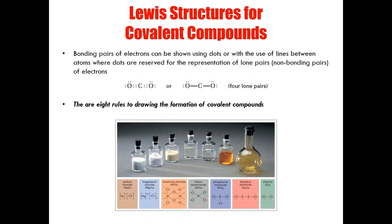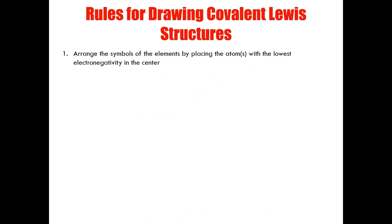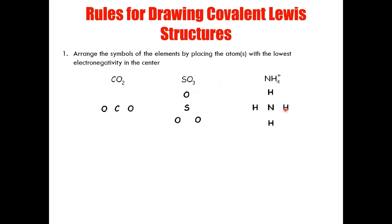There are eight specific rules for drawing the formation of covalent compounds. The first rule is to arrange the symbols of the elements by placing the atom or atoms of lowest electronegativity in the center of your covalent drawing. In three examples — CO2, SO3, and NH4+ — carbon, sulfur, and nitrogen would be the central elements. When you have more than one central atom, it becomes especially important to remember that the lowest electronegativity atoms go in the center of your compound.